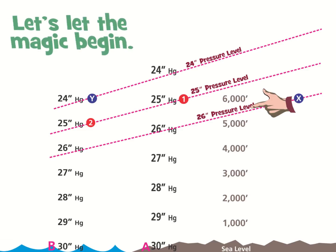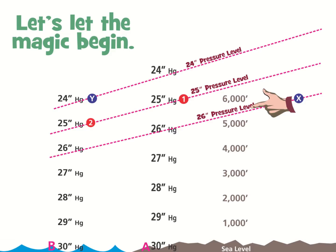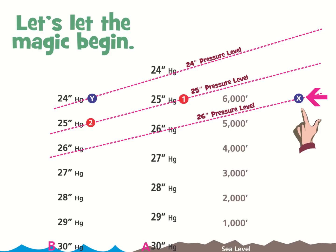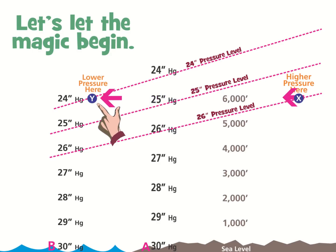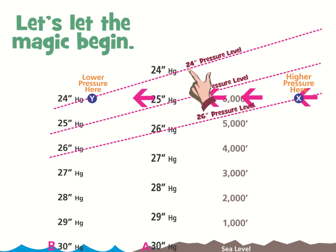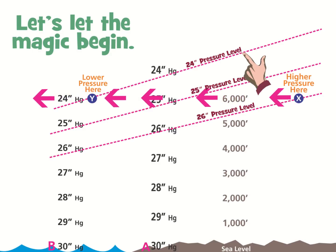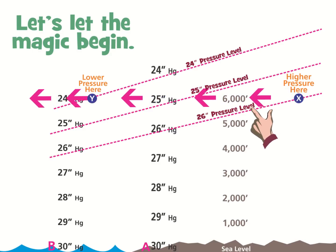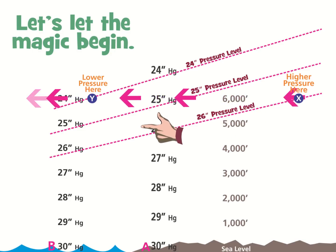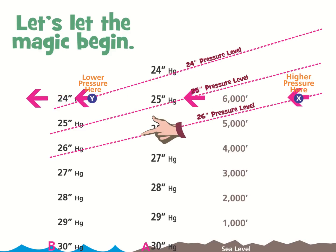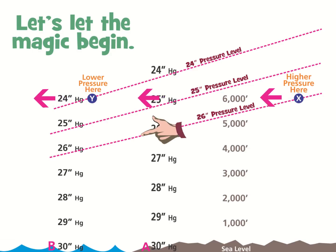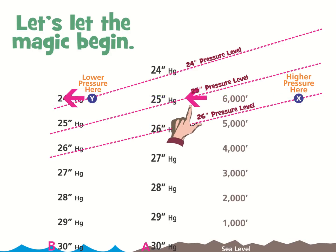And here is where the magic begins. We know that air moves from high pressure to low pressure. So a tiny parcel of air at position X, which is at 26 inches of mercury, will move to the area of lower pressure located at position Y. That's because the air at position Y rests along the 24-inch of mercury pressure level, and 24 inches of mercury is certainly less pressure than 26 inches of mercury. When pressure levels are tilted even slightly, they generate a pressure differential in the horizontal direction — also known as a pressure gradient force — and this is what generates movement of the atmosphere, also known as wind.